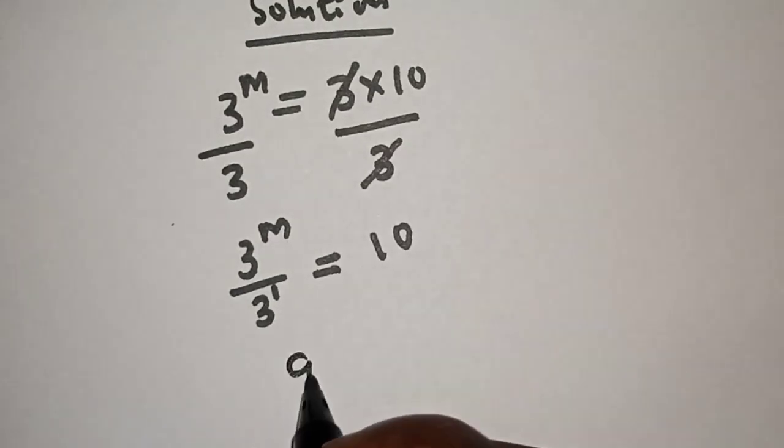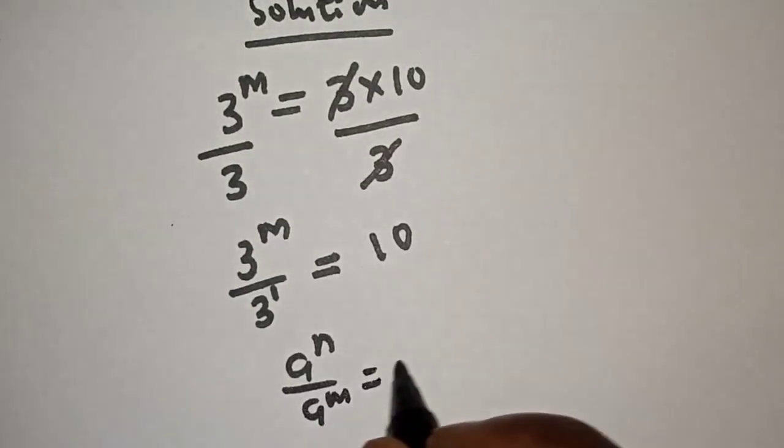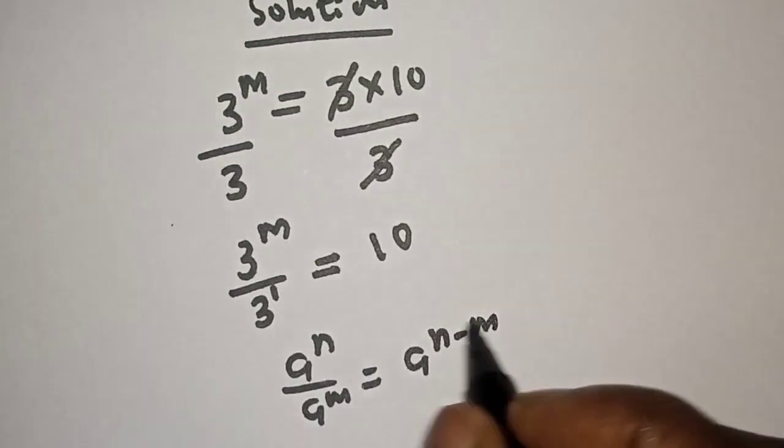And if you have a raised to power n over a raised to power m, this is equal to a raised to power n minus m.